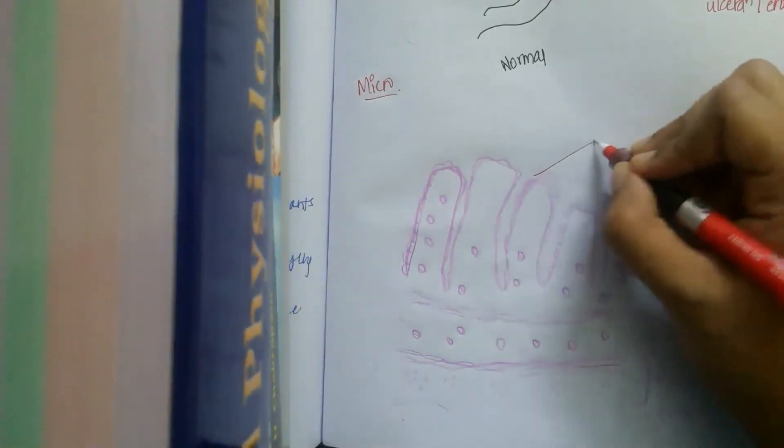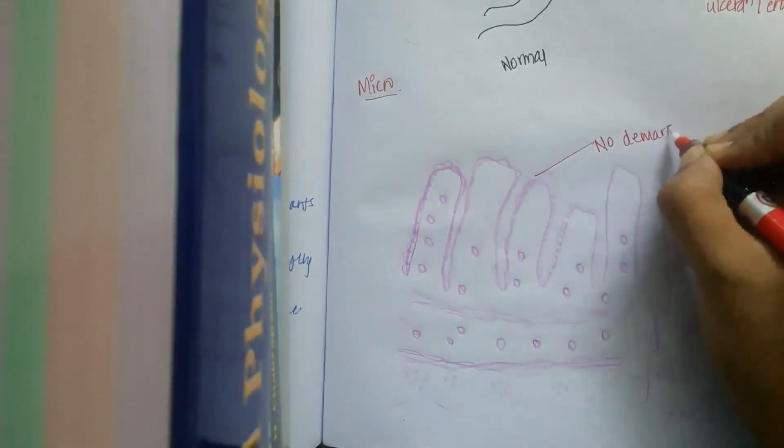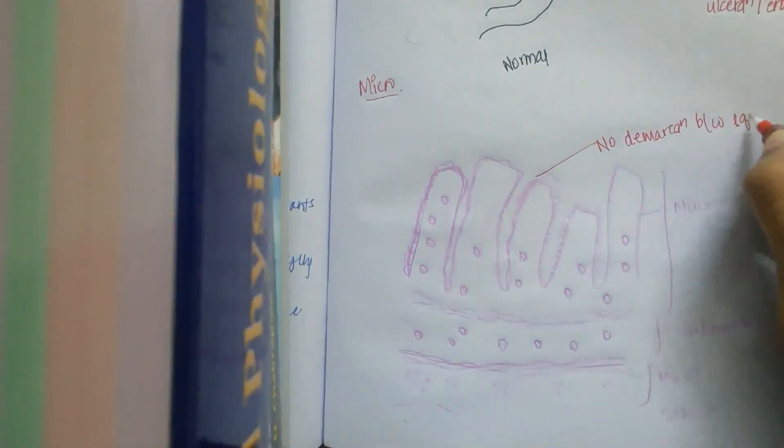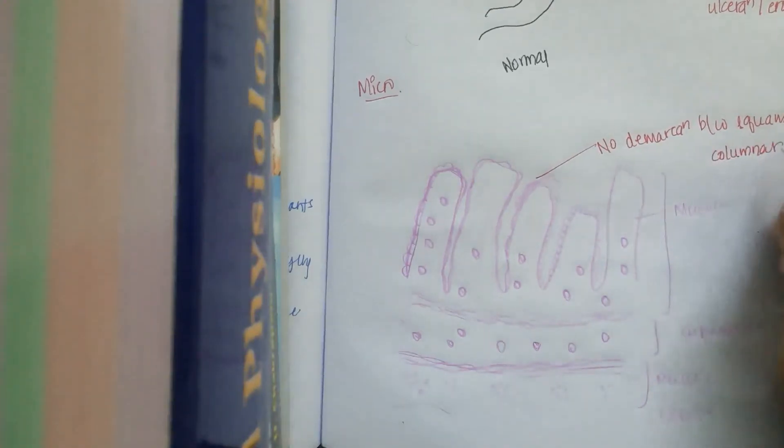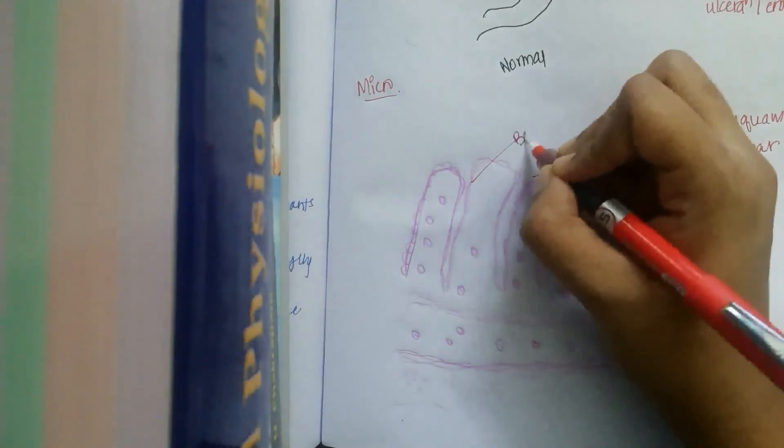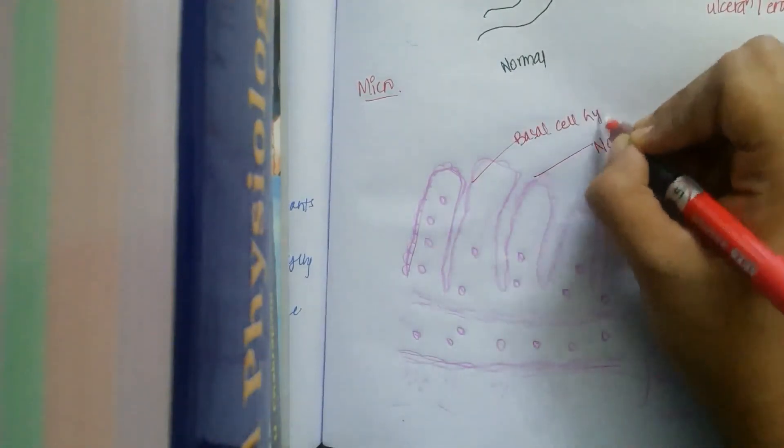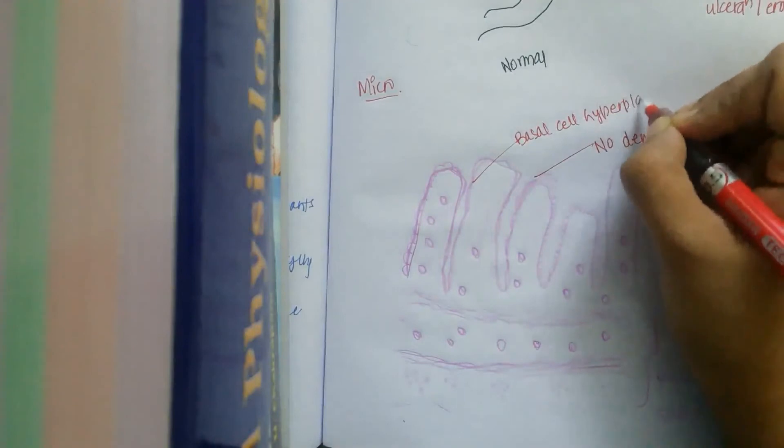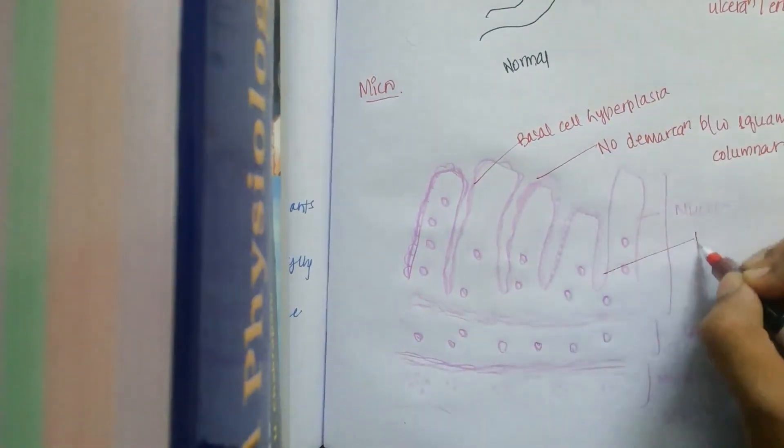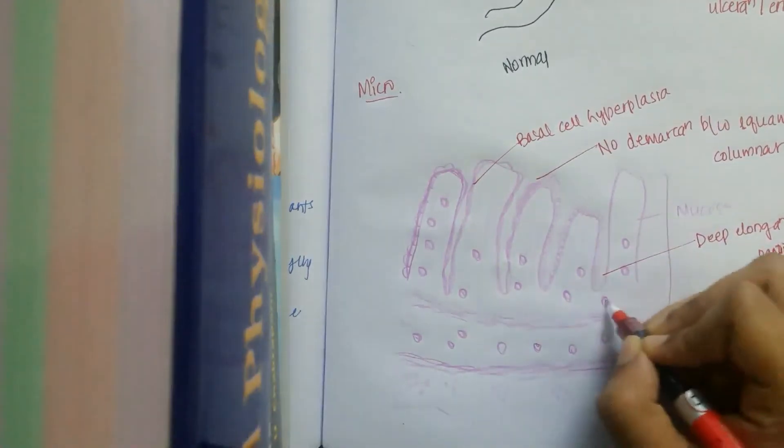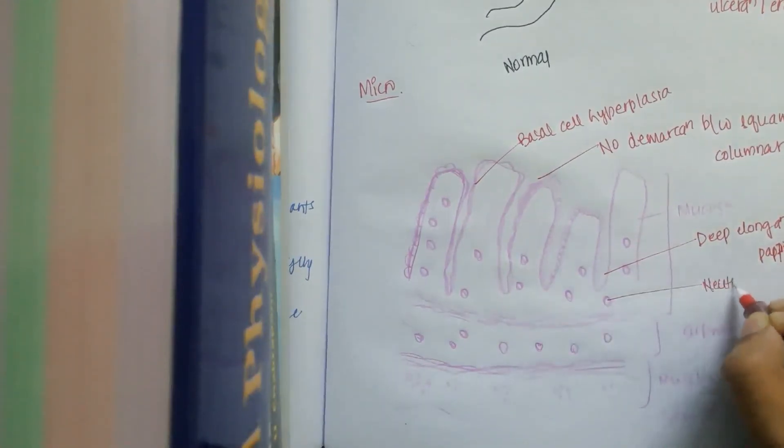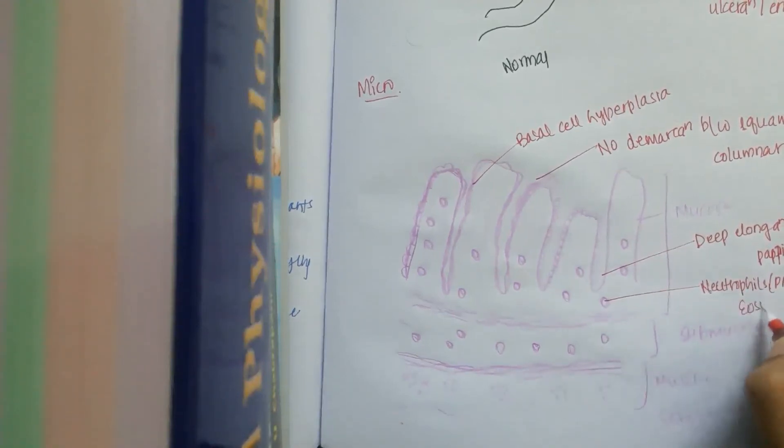So what are the basic features? One is no demarcation between squamous and columnar, and the other one is there is basal cell hyperplasia. I didn't show this but in my next video I'll try to show this if possible. And then you can see deep elongation of papillae and neutrophils, that is PMNs infiltration is seen in mucosa and submucosa.